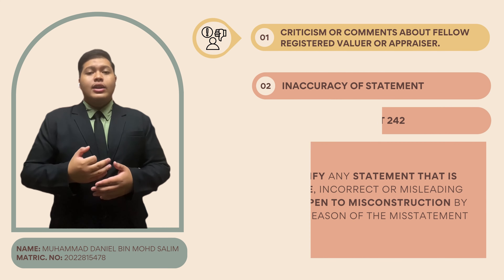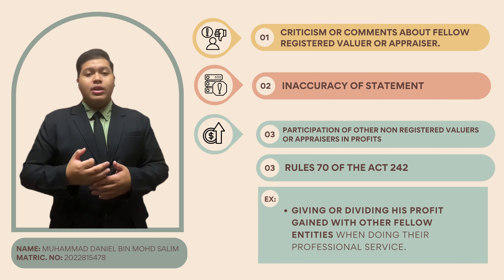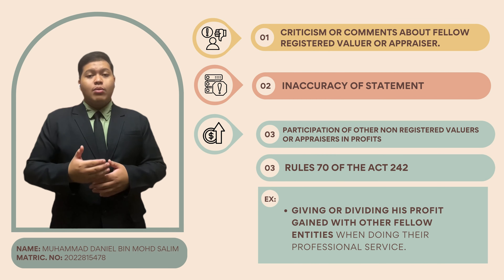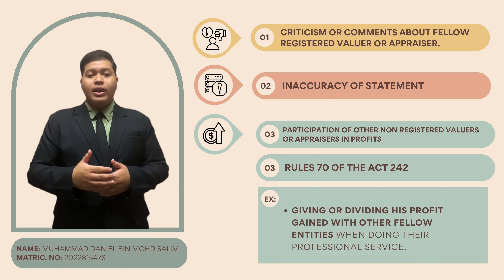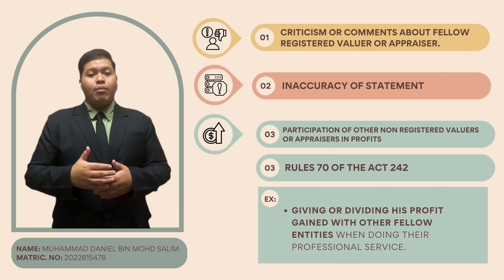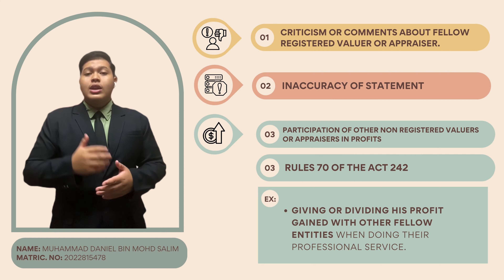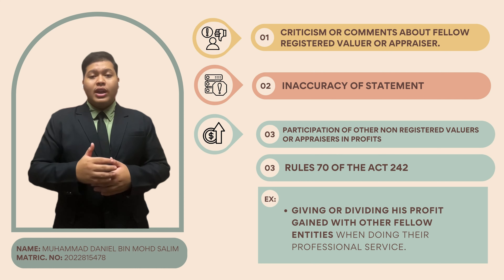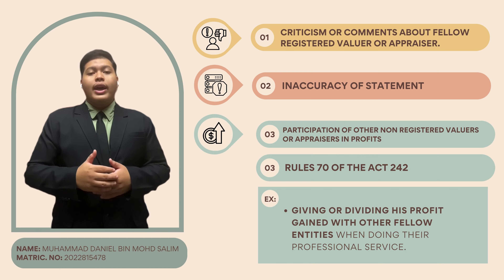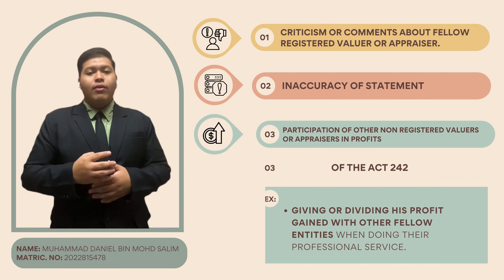Third, no participation of non-registered entities in profit. Rule 73 forbids registered valuers and appraisers from sharing professional profit with non-registered entities, ensuring the integrity of their professional work and maintaining equity in spending.